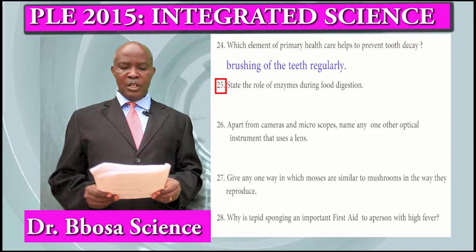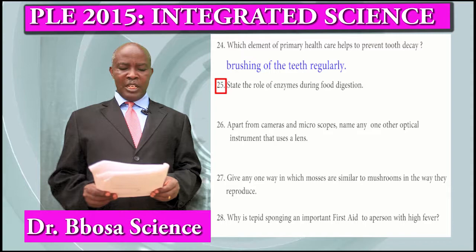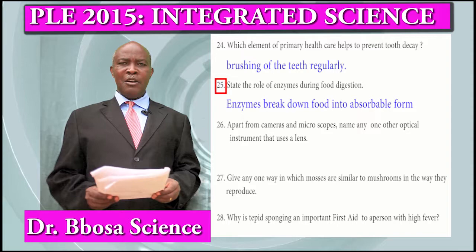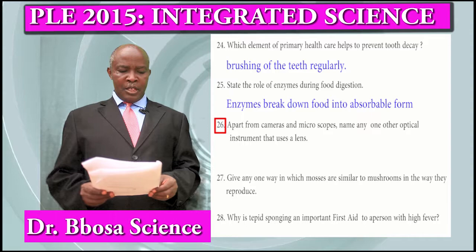Question 25: State the role of enzymes during food digestion. Enzymes break down complex food substances into absorbable form.